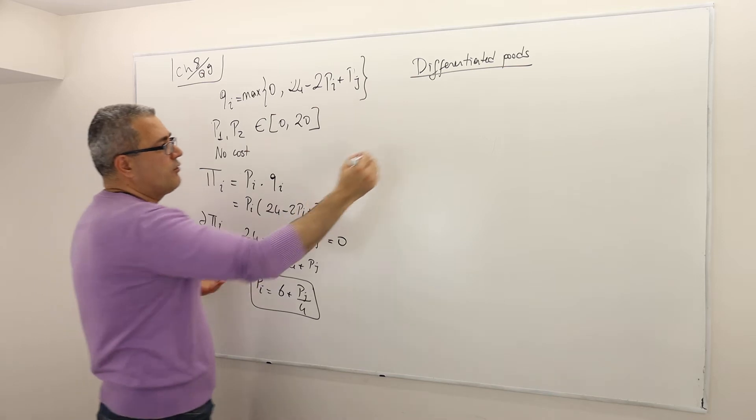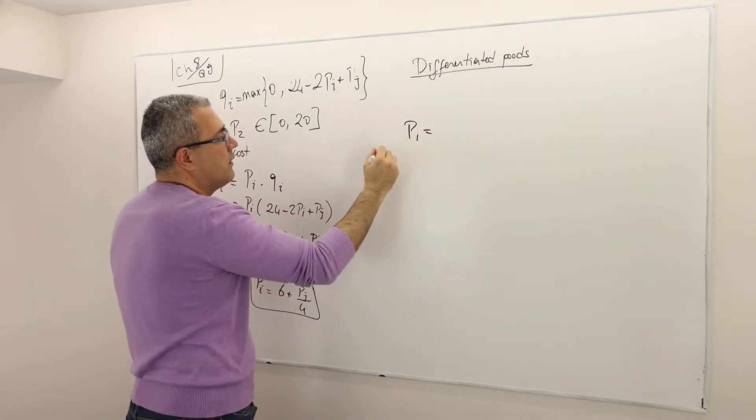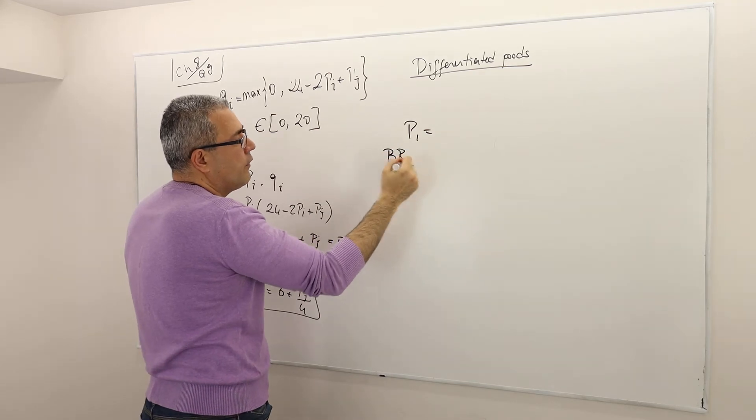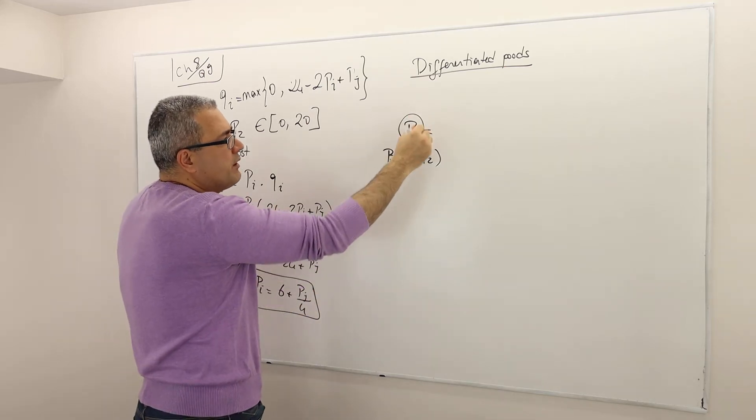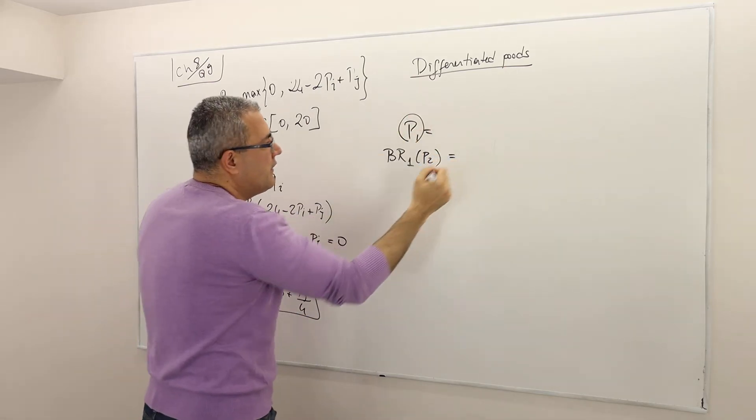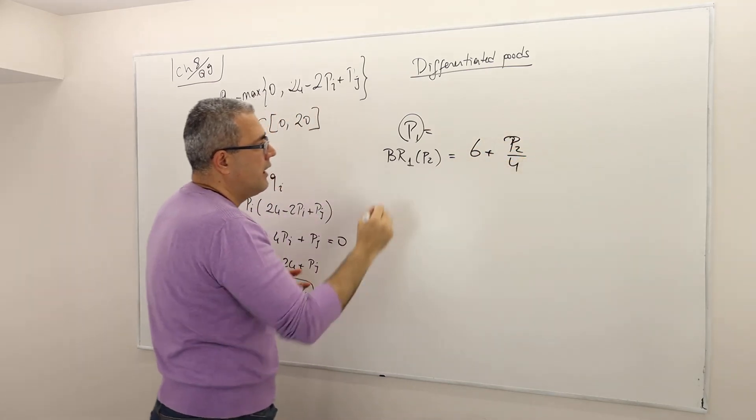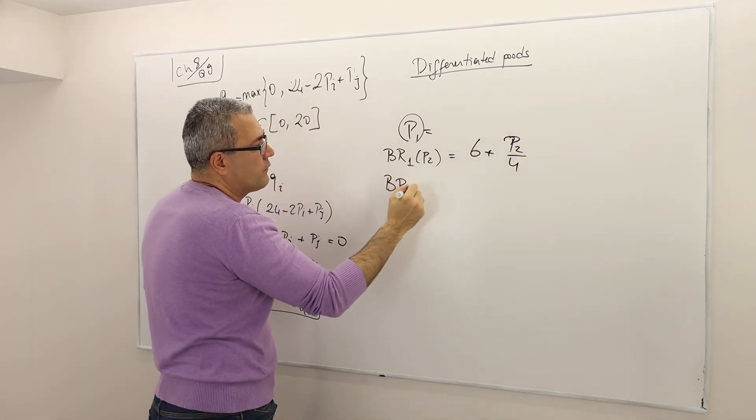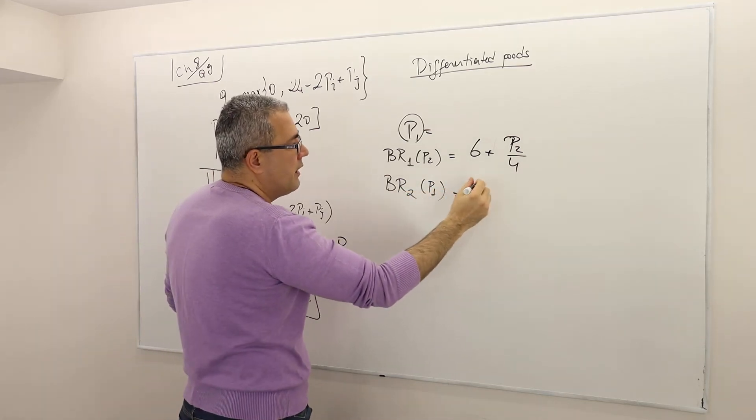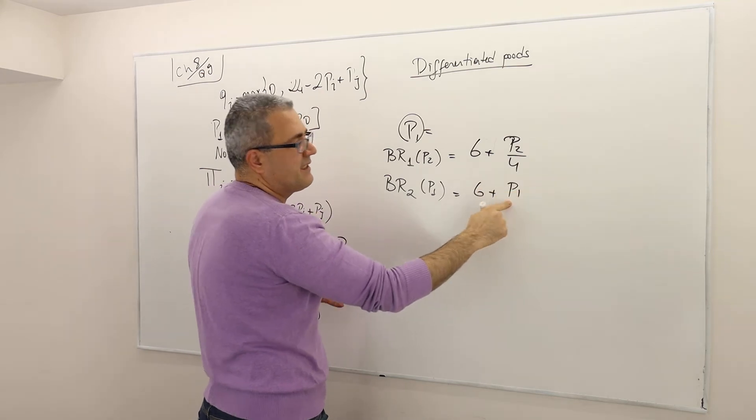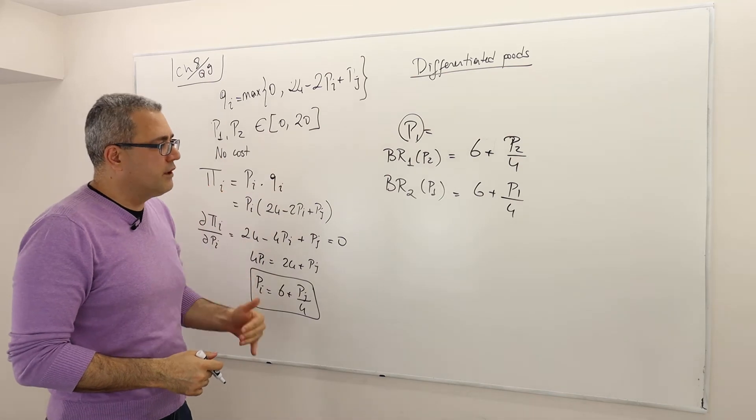Why do I keep writing i, j? Simple. Here, actually, because the game is symmetric, the best response for firm 1, given that firm 2 is charging p2, or we just simply write it as p1, is actually equal to this: 6 plus p2 divided by 4. And similarly, best response for the second firm, given that the first firm's price is p1, is again 6 plus, but this time price of good 1 divided by 4. So these are the best response functions.